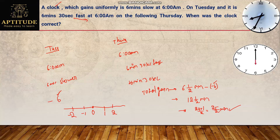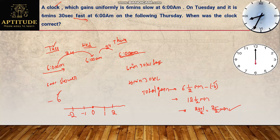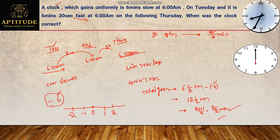From Tuesday 6 am to Thursday 6 am: one day Wednesday in between, so 24 + 24 = 48 hours total. In 48 hours the clock gains 25/2 minutes. For the clock to show the correct time, it must gain exactly 6 minutes from its starting point of −6 minutes (so it reaches 0). Using proportion: 48 hours → 25/2 minutes gain; x hours → 6 minutes gain.